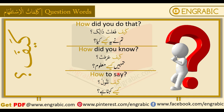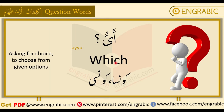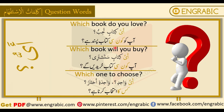How did you know how to say that? — kaifa na'qil. Next is 'ayyu,' meaning 'which.' In English it is called 'which,' while in Urdu it is called 'kaunsa' or 'kaunsi.' We use it for asking about a choice — when given options and we have to choose one. For example: 'Which book do you love?' — ayyu kitabin tuhibbu — aapko kaunsi kitaab pasand hai.